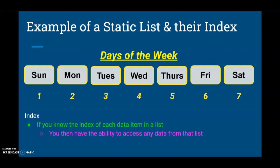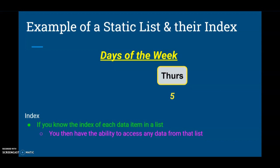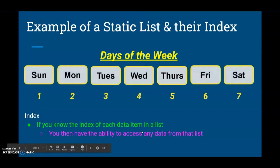Here's an example of a static list and its index. We've created a list of the days of the week — Sunday through Saturday. The index is the position of each data item: Sunday has an index of 1, Monday an index of 2, Tuesday an index of 3, and so on. You can access any data item if you know its index number. For example, calling index 5 would return Thursday. This applies to any day in the list, or any list you've created.